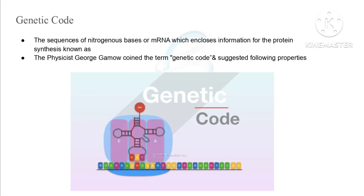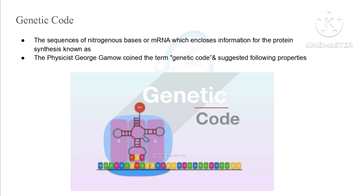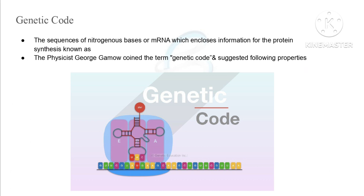Let's start. First, what is genetic code? The sequences of nitrogenous bases A, T, G, C and U on mRNA which encloses information for the protein is known as a genetic code. The physicist George Gamow coined the term genetic code and suggested the following properties.